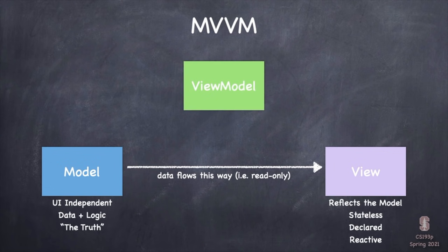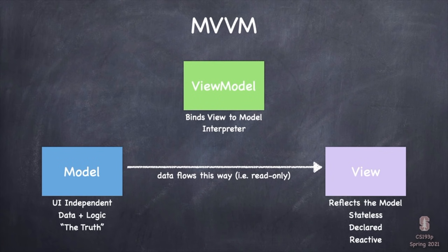At its core, MVVM's job really is just to hook up the models to the view so that any change in the model will cause the affected parts — and only those affected parts — of the view to be rebuilt. This is all facilitated by the third element, the ViewModel. The ViewModel's job is to bind the view to the model so that changes in the model cause the view to react and get rebuilt. It can also serve as a sort of interpreter between the model and the view, cleaning up data conversions and network calls so the view code stays simple.